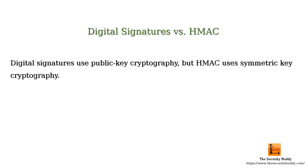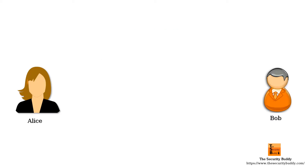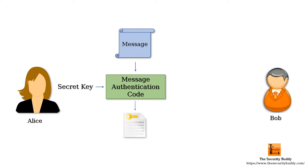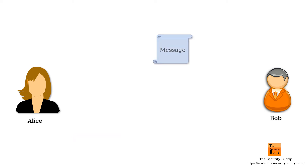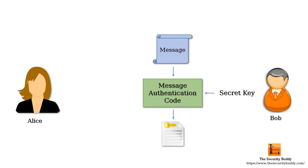Note that digital signatures use public key cryptography, but HMAC uses symmetric key cryptography. In the case of HMAC, a secret key needs to be pre-shared between Alice and Bob. Alice can generate the hash-based message authentication code using the secret key, and Bob can verify the message authentication code using the same secret key. Because the secret key is pre-shared, HMAC does not provide non-repudiation.